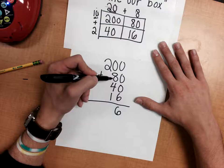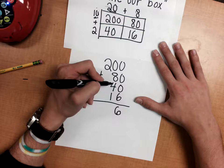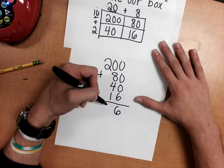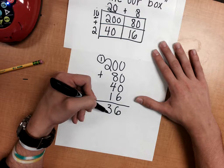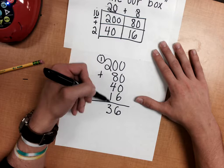In the tens place, 8 plus 4 plus 1 is 13. This is really 13 tens, so I'm going to put a 3 here and carry the 1, because we have 130 when we're really adding it up here. And then in the hundreds place, 2 plus 1 is 3.